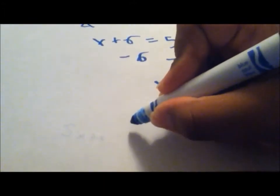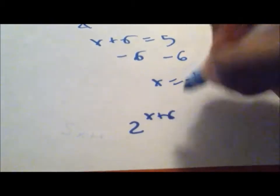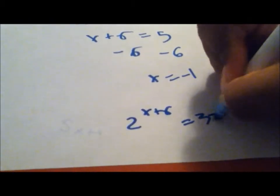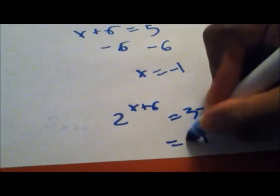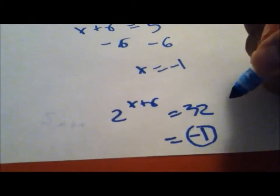Therefore, the solution of 2 to the power of x plus 6 equals 32 will lead to x equals negative 1. It's easy. Now let's do it more this way.